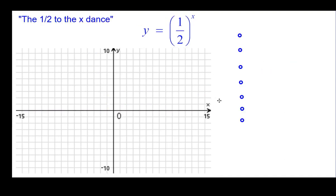And now we're ready to do the y equals one half to the x dance. So we'll start off with the y intercept. And then from the origin we'll go right one up a half, right two only up a quarter, and right three up one eighth. Getting smaller.